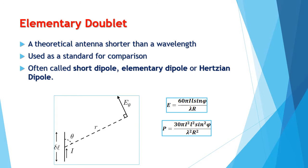The formula for the electric field for an elementary AA antenna is given by this equation: E is equal to 60 pi times the current I times the length L sine theta, where theta is given in the image on the left, divided by lambda — the wavelength of the electromagnetic wave being transmitted — times R, where R is the distance from the antenna.